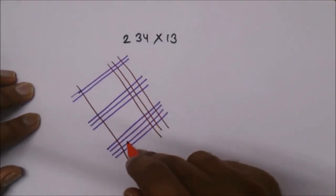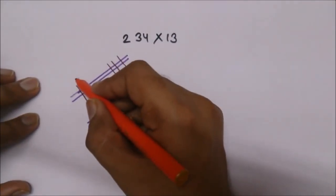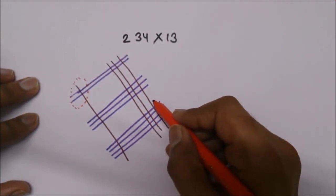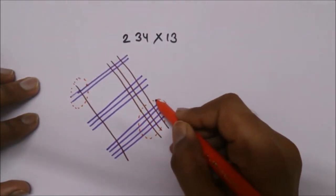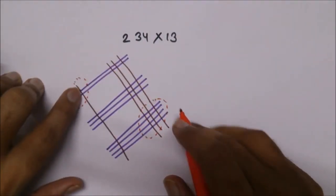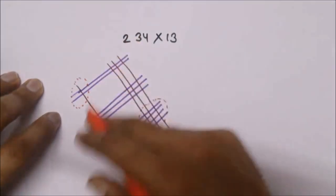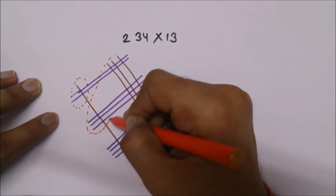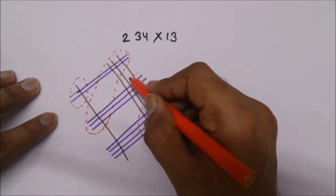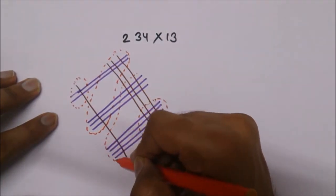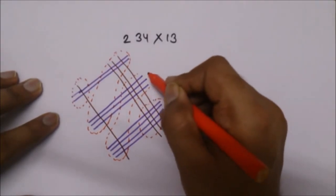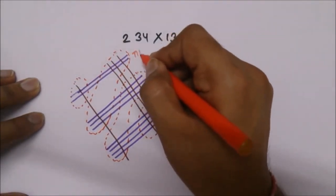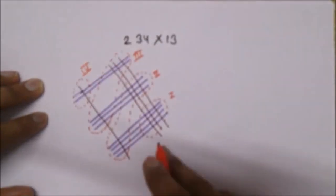Now we will count the points of intersection, but first you need to draw the regions. You need to pair up the line groups into regions. There are a total of 4 regions.